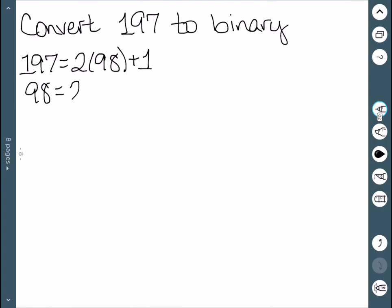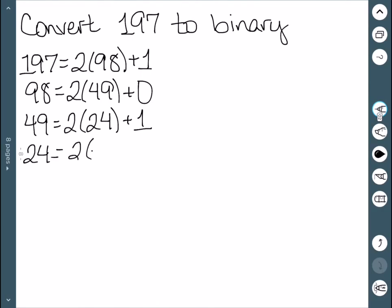98 divided by 2 is 49 with a remainder of 0. 49 divided by 2 is 24 with a remainder of 1. 24 divided by 2 is 12 with a remainder of 0.